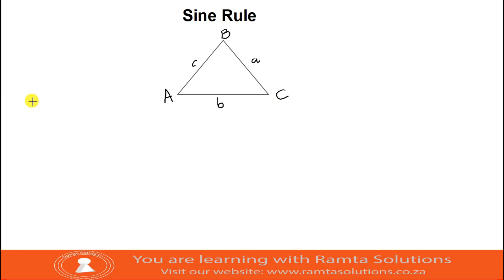Hello guys, welcome to Ramta Solutions. Today we're looking at the sine rule — we are deriving the sine rule. We are given triangle ABC where side AB is equal to small c, side BC is equal to small a, and side AC is equal to small b.